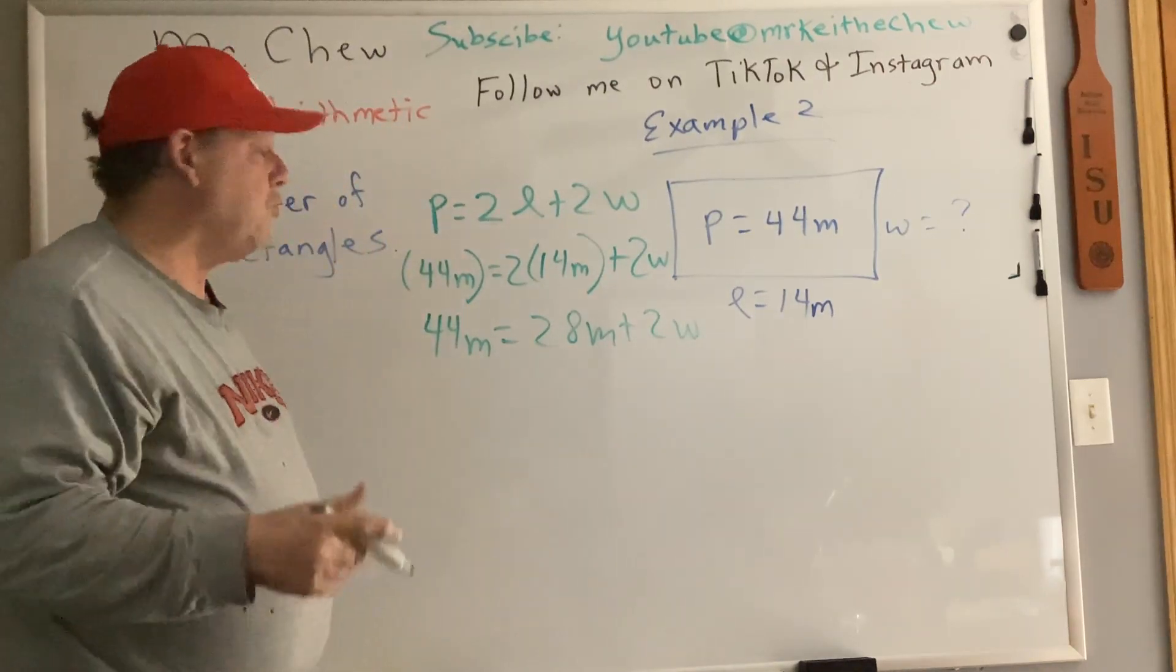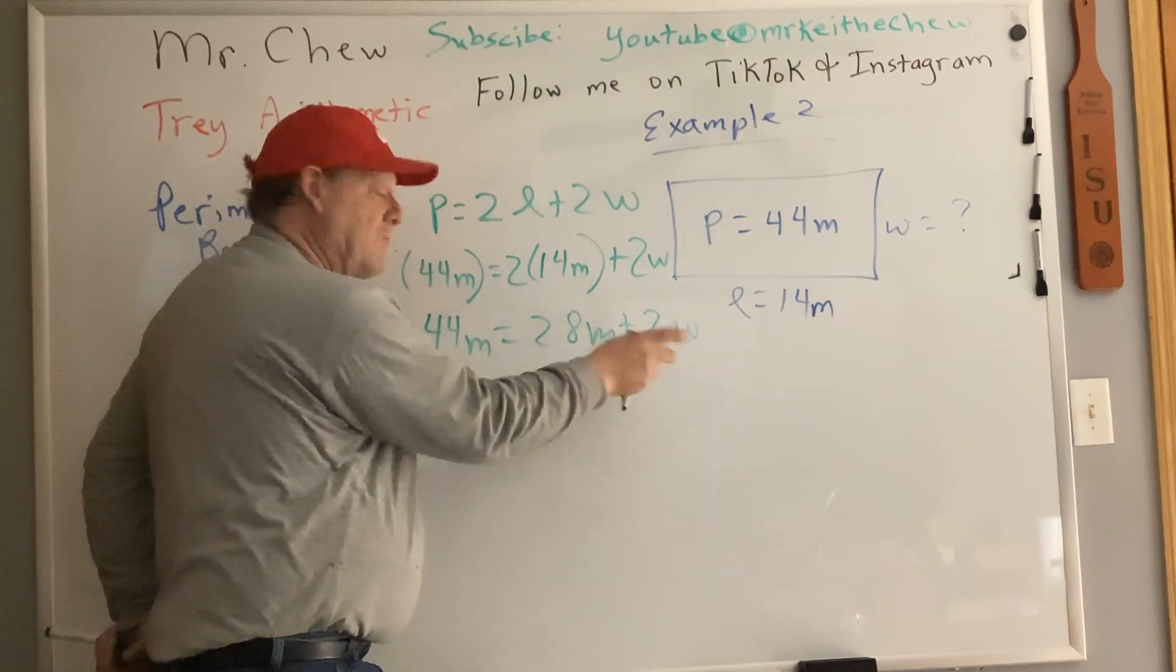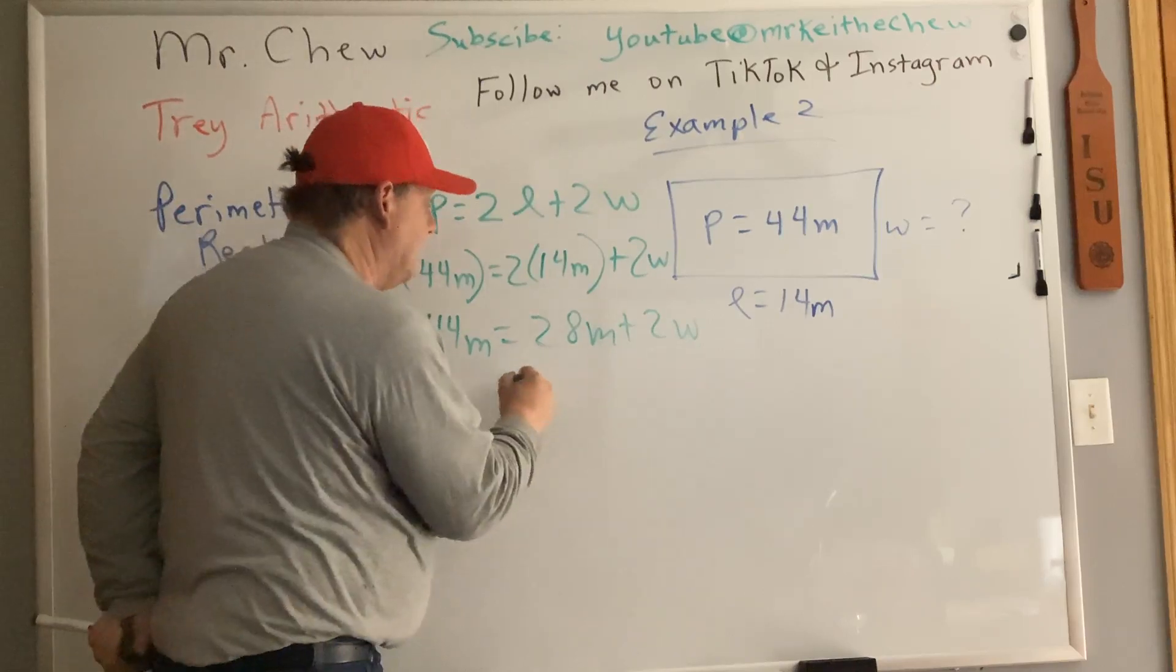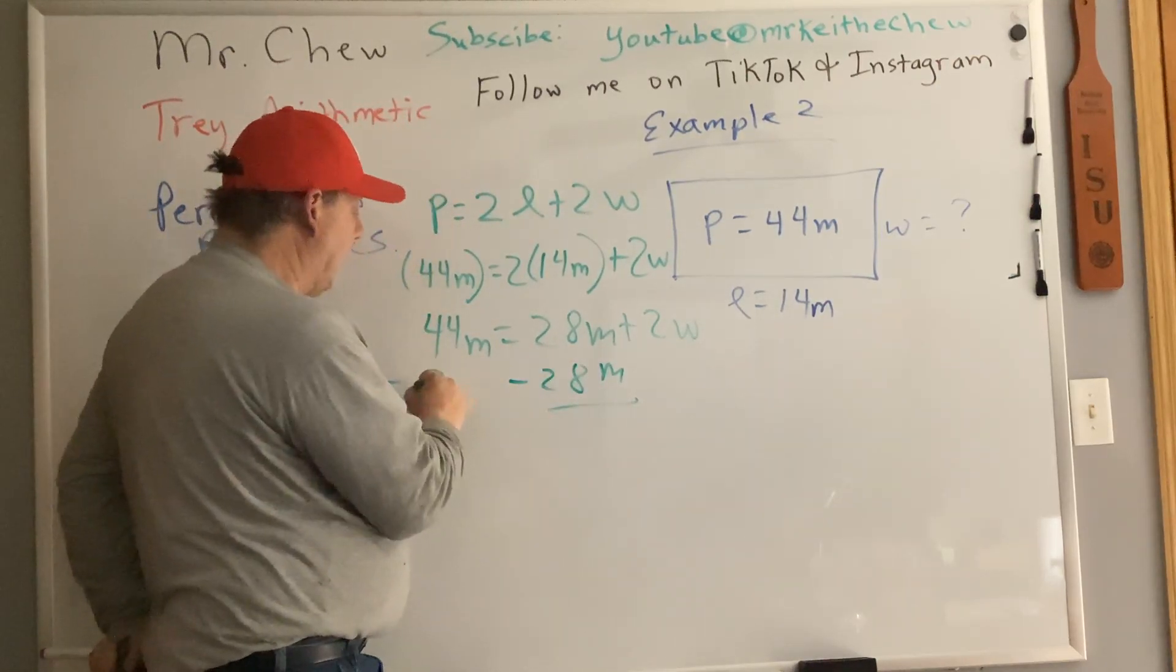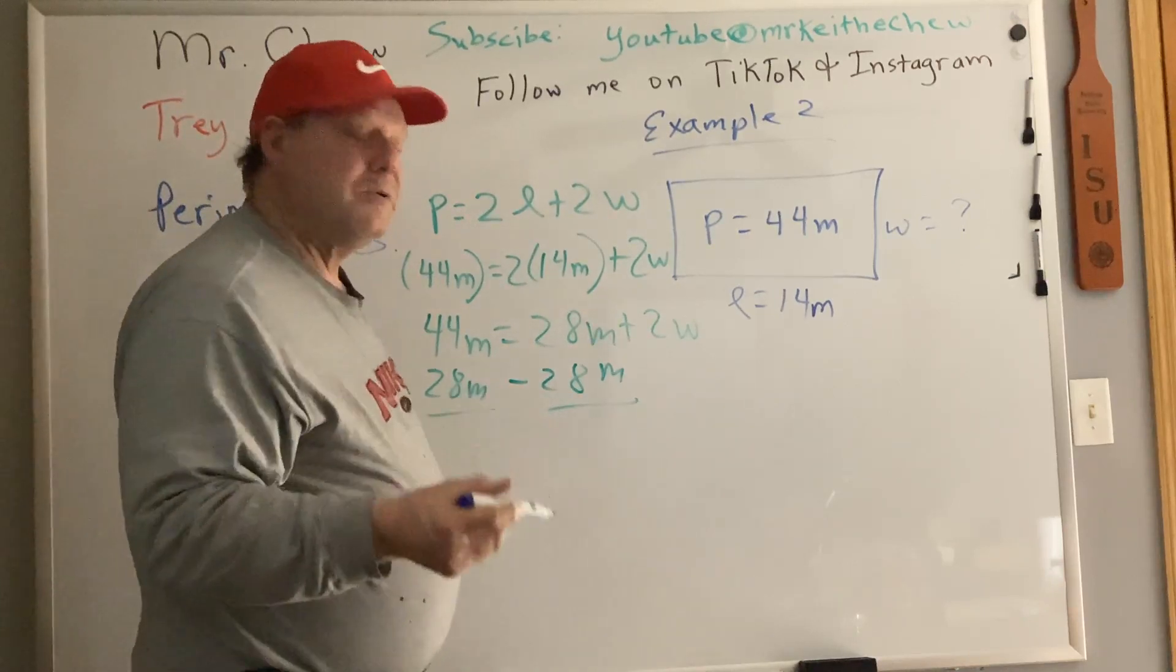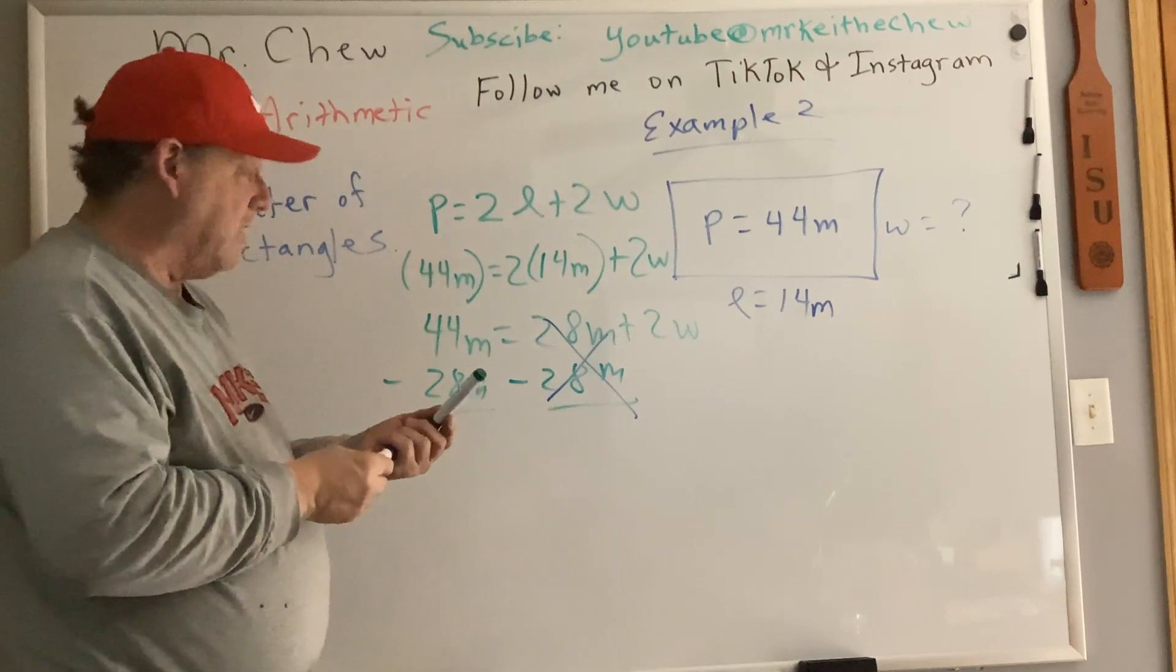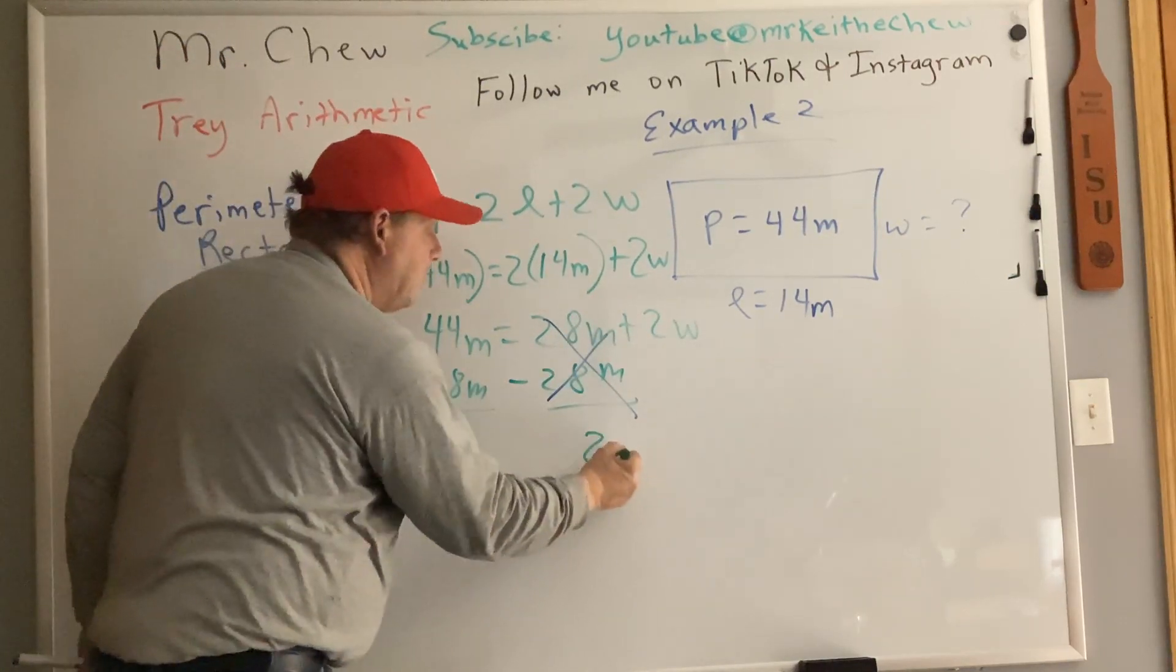And we're going to solve for W, we're going to isolate W by itself. So anytime that you have an equation like this is called a two-step equation. I have to move the plus 28 from the right to the left by doing the inverse or opposite. So I subtract the 28m from the right and a 28m from the left.